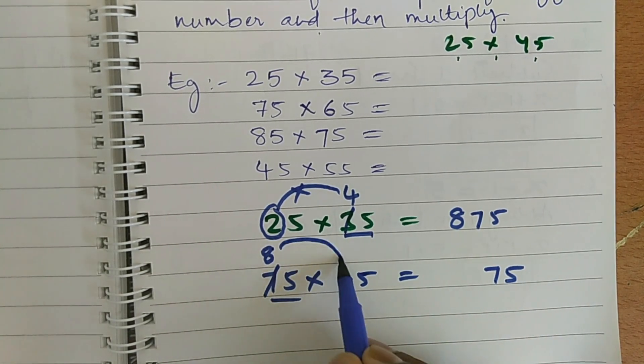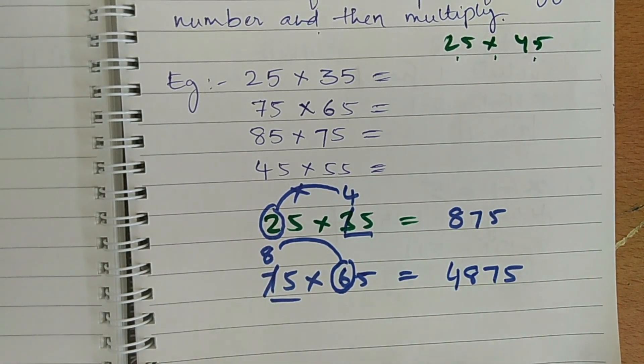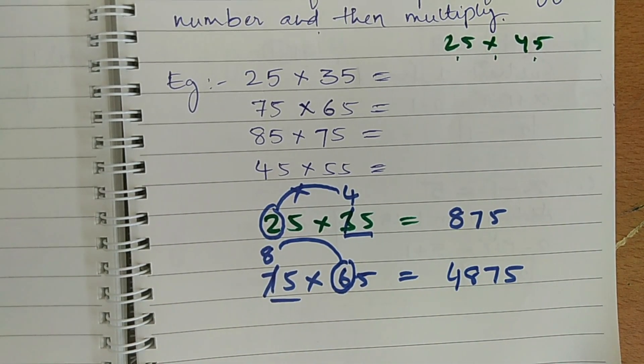Now, directly multiply 8 into 6, 8 into 6 is 48. So, my answer is 4875.